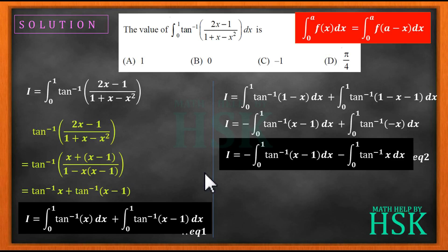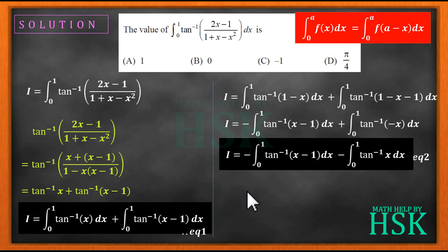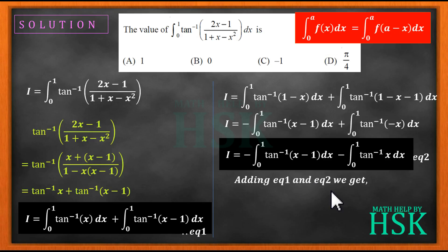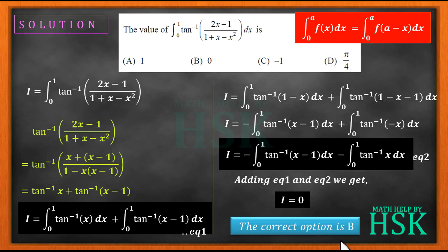Now adding equation 1 and equation 2, the ∫tan⁻¹(x-1)dx terms cancel out and the ∫tan⁻¹(x)dx terms also cancel out. So ultimately, adding equation 1 and 2, we get 2I = 0, which implies I = 0. Therefore the correct option is option B. This is the required answer.